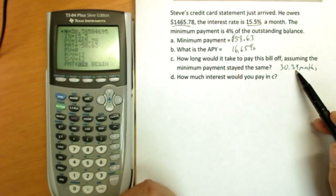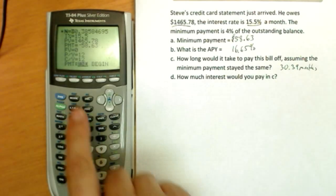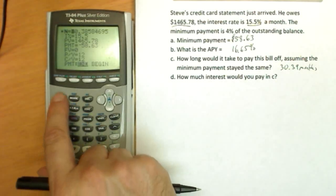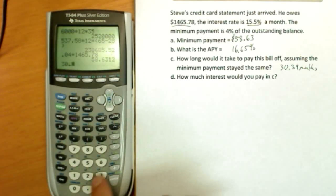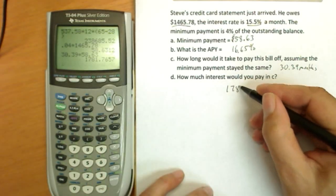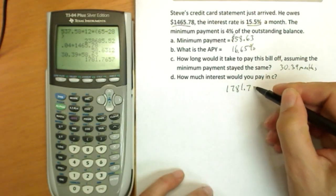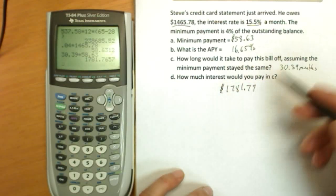How much interest would you pay in C? Well, we'll just use that 30.39 months times our minimum payment $58.63, and we get the total amount we're going to spend of $1,781.77.